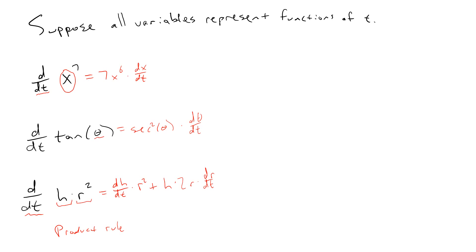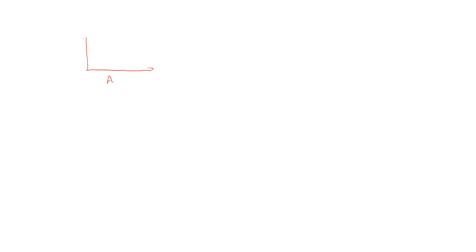All of these are extensions of the chain rule — you do your regular derivative rule and then multiply by the derivative of the inside function. To explain why we differentiate with respect to t: in related rates, we deal with geometric shapes whose size changes as time goes by. For example, suppose person A is traveling due east and person B is traveling due north.